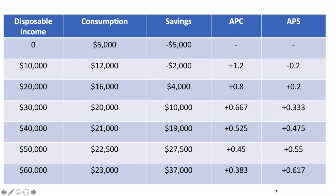There may be slight variations due to rounding but your answers should align with these figures. If you're wondering how someone can spend money when they have zero disposable income, they are able to fund that spending by using their savings or potentially borrowing money. Even with no income, individuals still need to spend money to survive. The average propensity to consume is lower at higher levels of disposable income, and the average propensity to save is greater at higher levels of income. Note that the values of APC and APS should always add up to 1 — you can always double check your work this way. The APC can be greater than 1 but then the APS value will have to be negative.